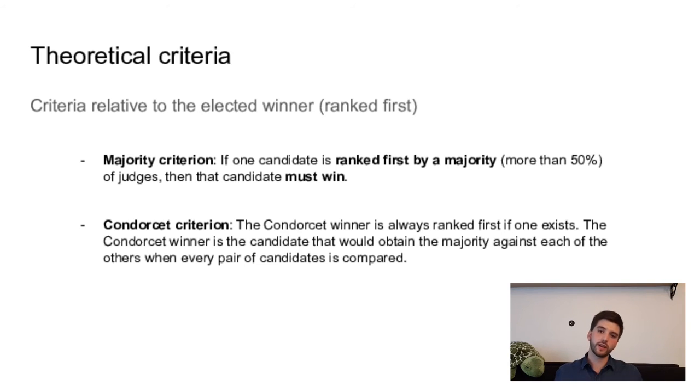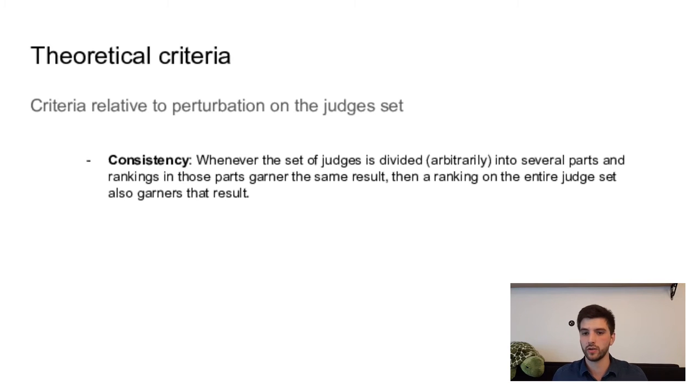We have also criteria relative to perturbation on the judges set. So consistency, which is if you divide the judges set into several parts and in all of those parts you obtain the same ranking, then you should obtain also the same ranking on the whole judges set. That's the consistency criterion.